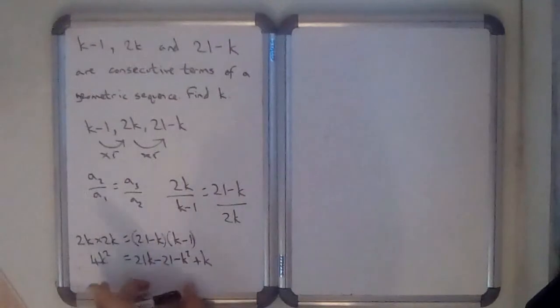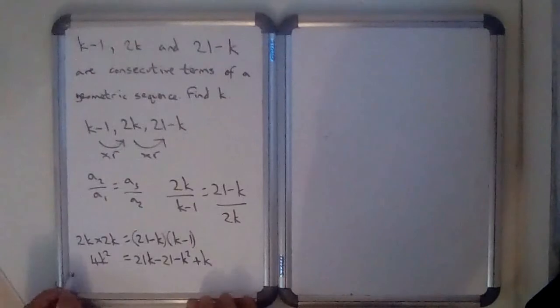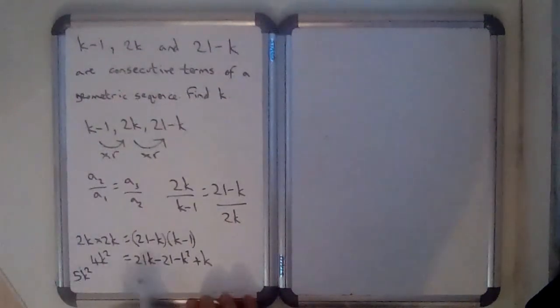...I'm going to have to leave the 0 on this side to keep my k's positive. So 4k squared plus k squared is 5k squared. Then for your k's...